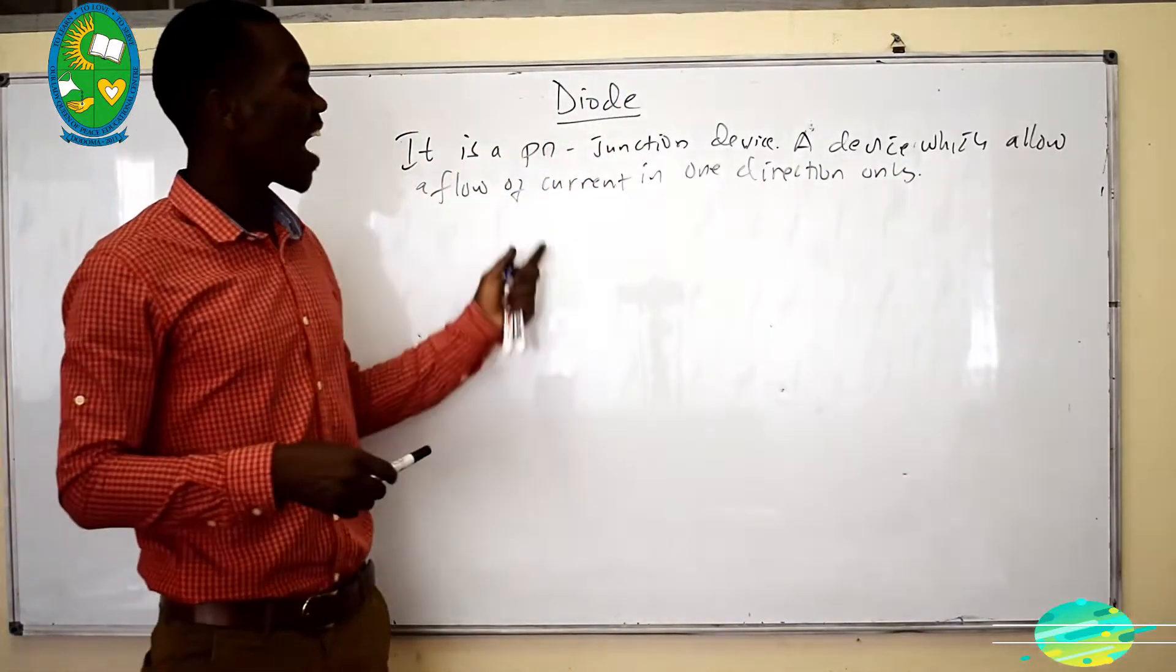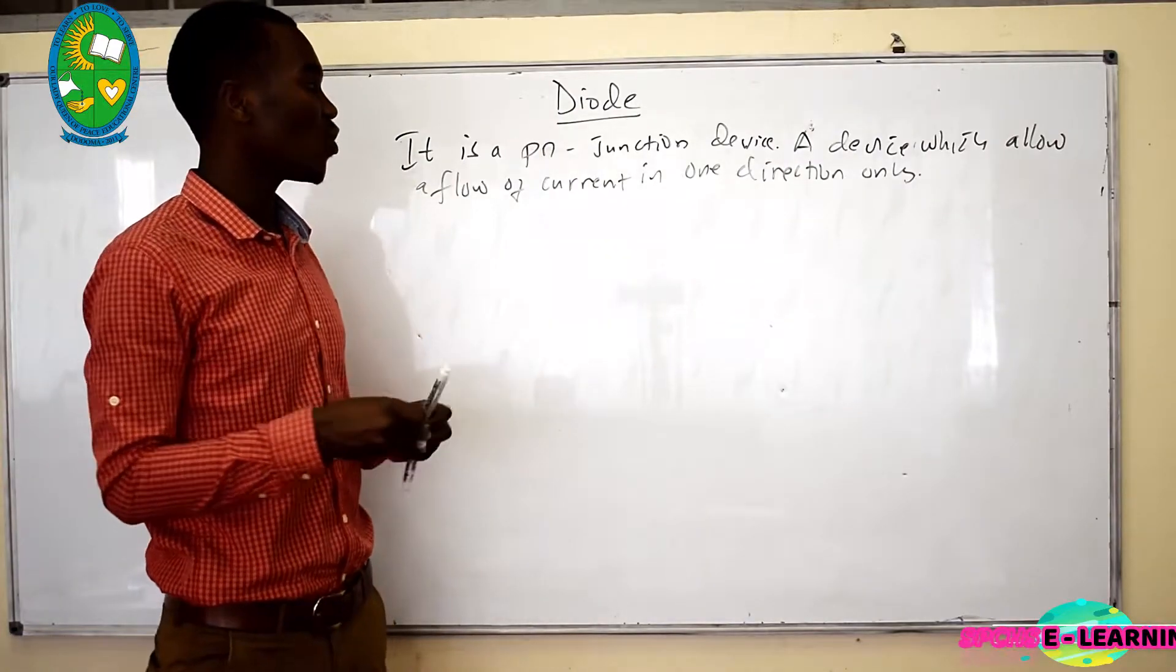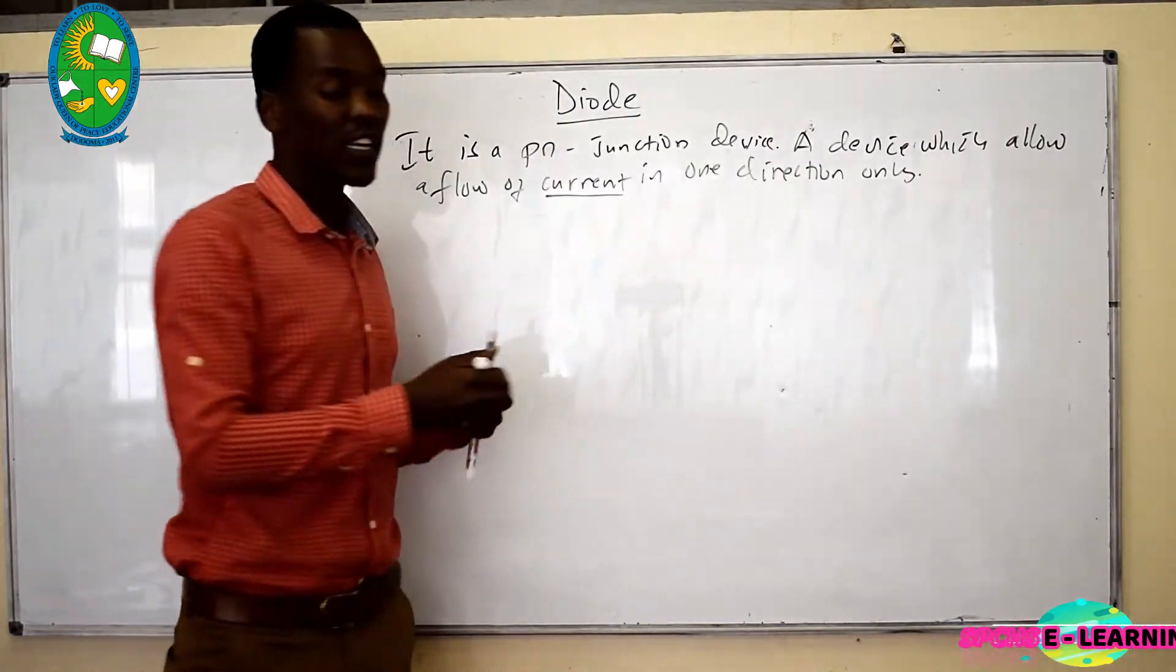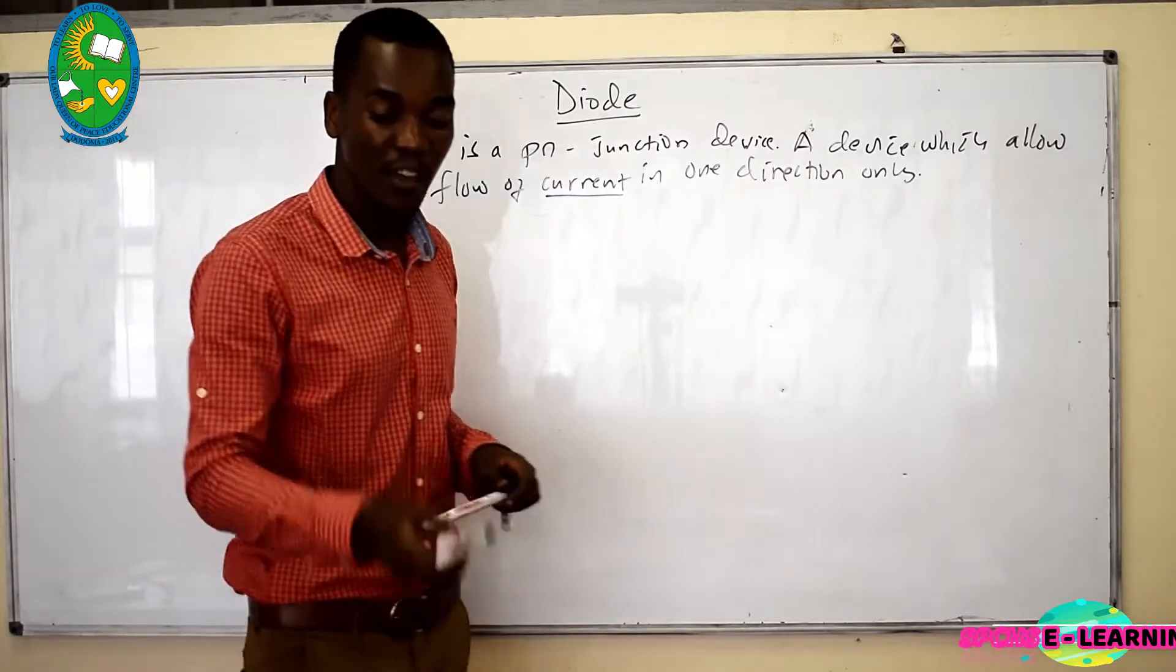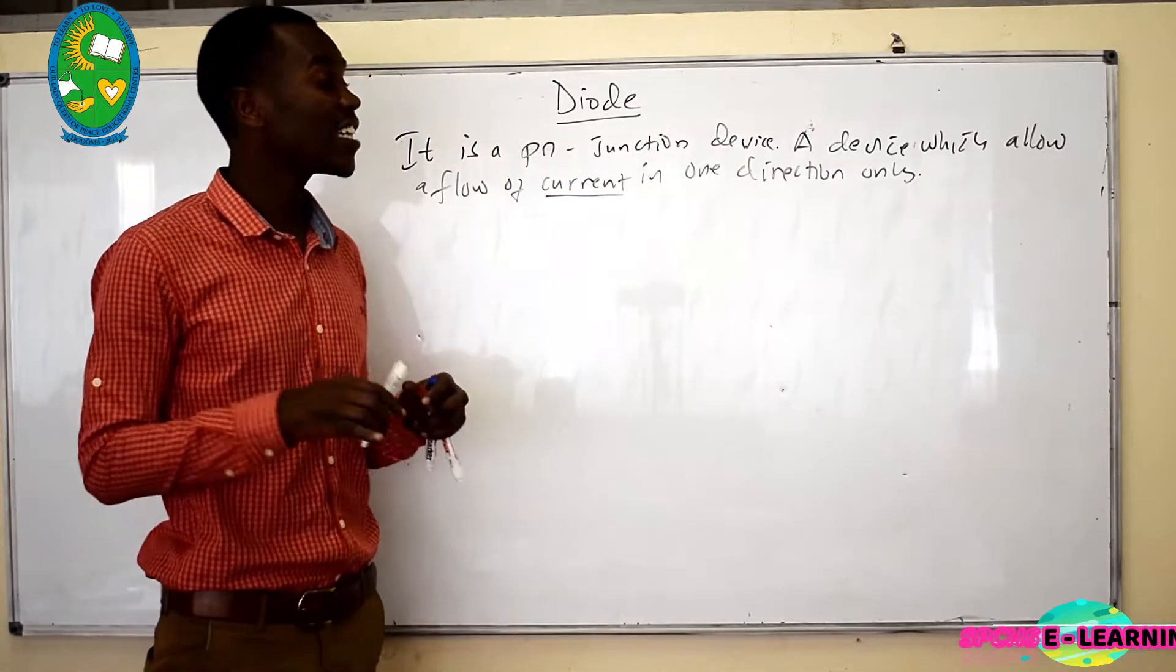This PN junction allows a flow of current in one direction only. That is why we discussed biasing of this PN junction.